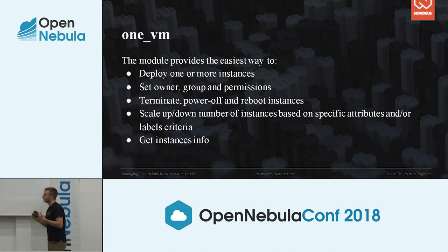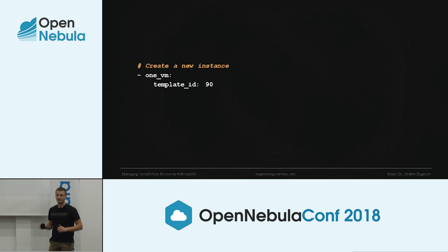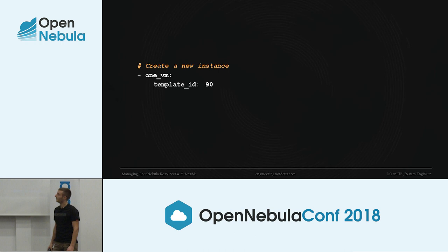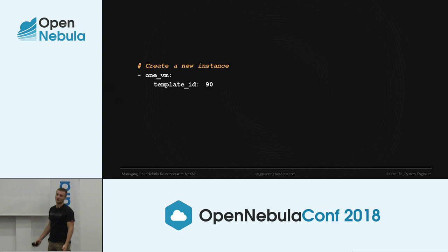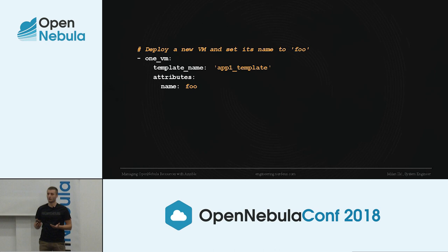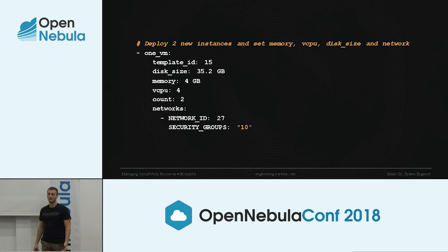In order to create a virtual machine, everything you need to write is just the template ID — as simple as that. No scrolling and searching for a template in the OpenNebula web interface. If you want to give the machine a name, you can specify the name attribute. And if you want to customize your virtual machine, we provided options for that — you can set custom memory, disk size, vCPUs, and so on. We covered almost all possible options and even more.